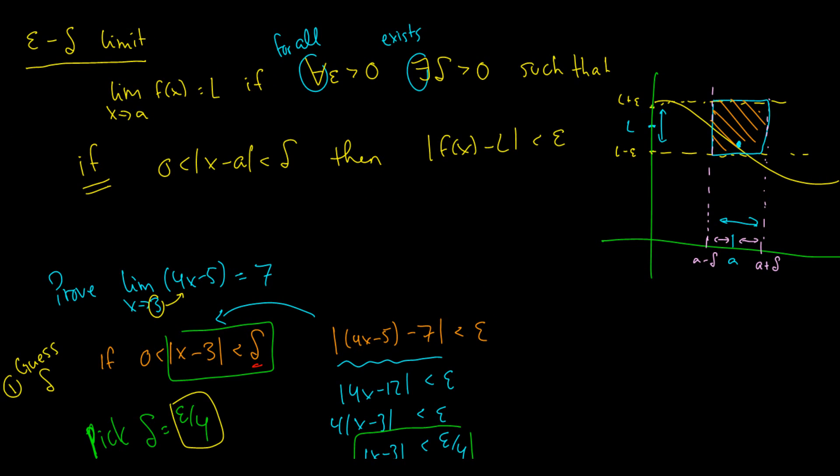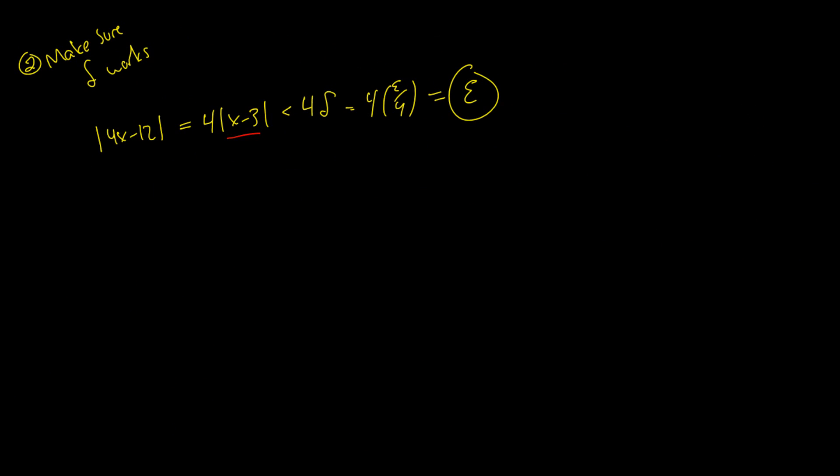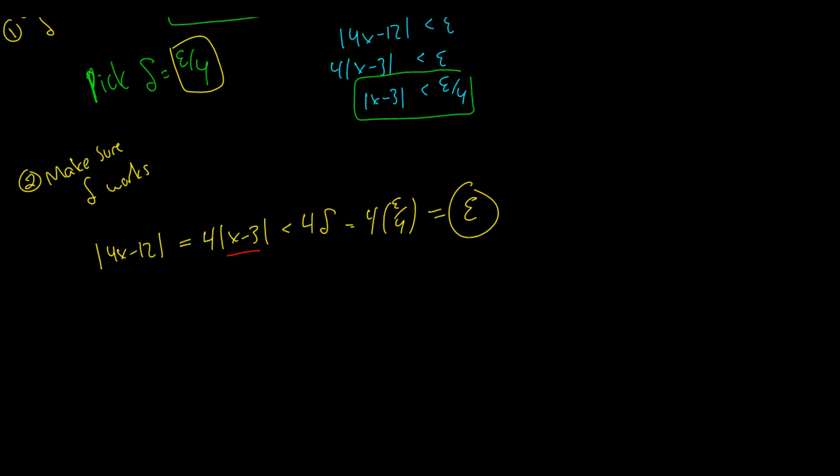So now, because of that, we have proven that this statement is true, because we picked a delta here, and we got an epsilon out there. So because we picked those two numbers, and it came out to be true, thus the proof is complete.